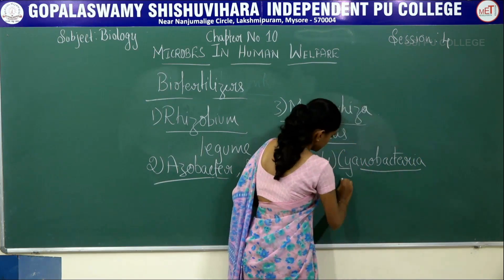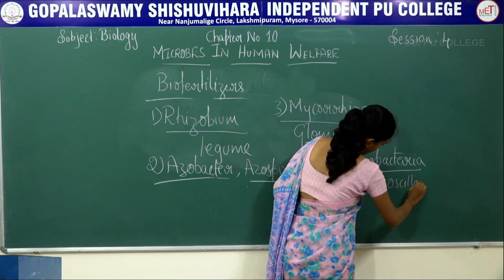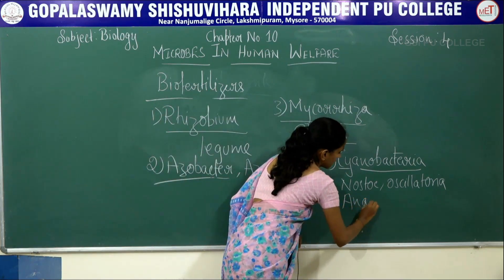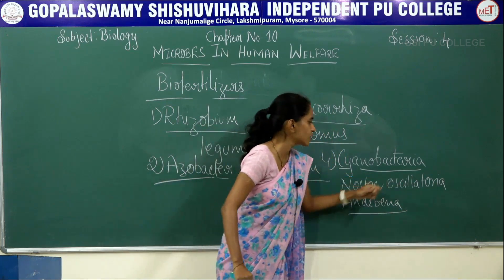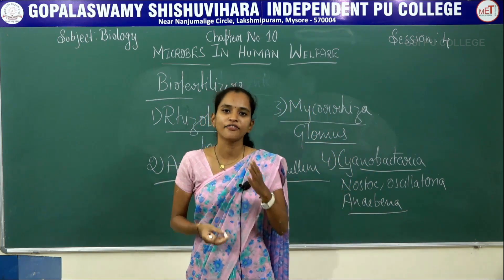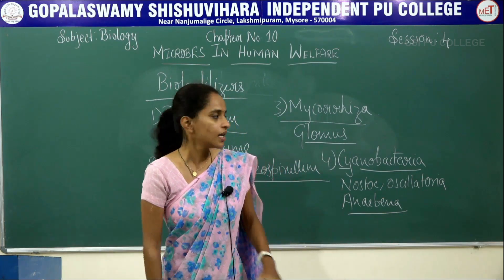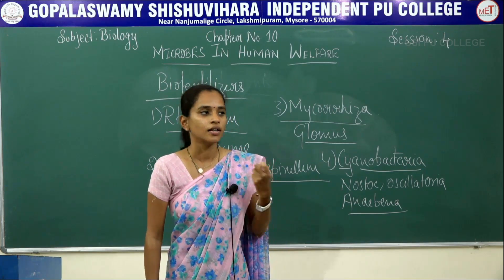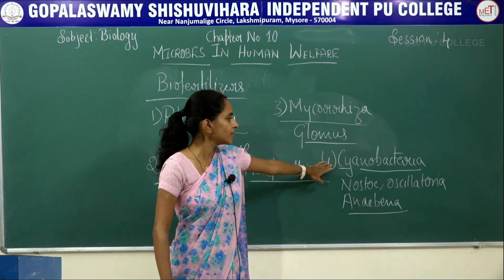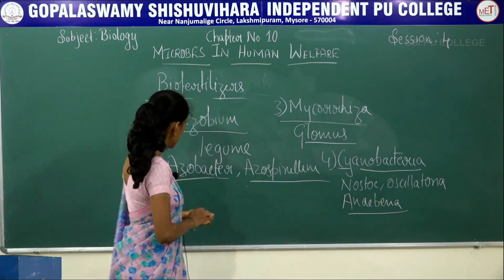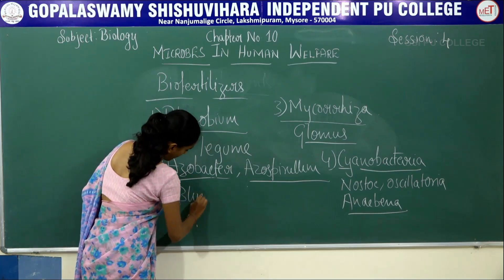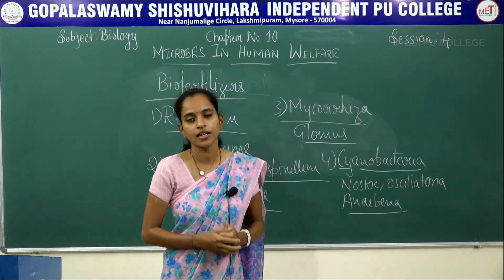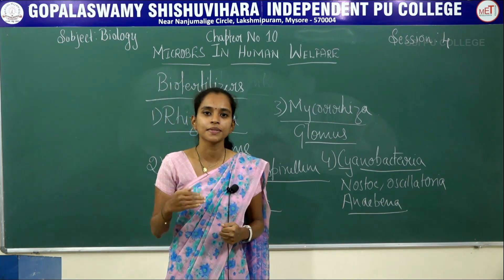The next form is cyanobacteria, including Nostoc, Oscillatoria, and Anabaena. These are either free-living in the terrestrial region or aquatic. Both aquatic and terrestrial cyanobacteria help in fixing nitrogen and absorption of nutrients from the soil as well as from the aquatic medium. That is why these act as bio fertilizers.